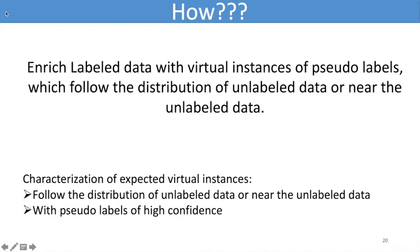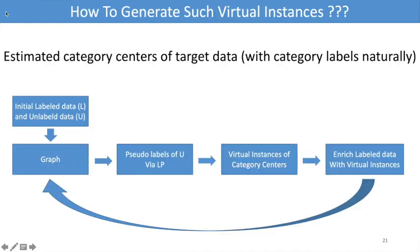First, they should follow the distribution of unlabeled data or be near the unlabeled data. Second, they should be assigned with pseudo-labels of high confidence. We instantiate those virtual instances with the estimated category centers of the target data. More detailed clarifications can be found in the paper.